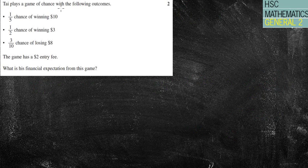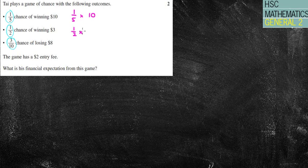Ty plays a game of chance with the following outcomes. The good thing about this is they give you the probabilities. So if they don't give you the probabilities, you might need to work that out. But in this case, we've got them there. I'm going to be doing 1 fifth times winning 10, a half times winning 3, and 3 tenths times losing 8. What is the financial expectation? We're going to be adding all these together. So if I put that in my calculator, 1 fifth times 10 plus 1 half times 3 plus 3 tenths times minus 8, we end up getting an answer of 1.1, which if it's in dollars, it's $1.10.